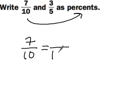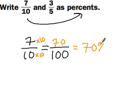Now I need to set it up to something where it's over 100. So I multiply this by 10 to get to 100. So I multiply the top by 10, I get 70, then it ends up equaling 70%.